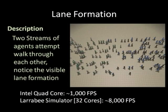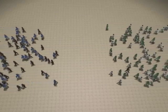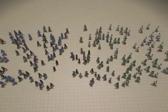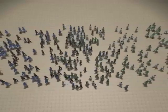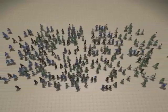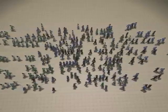Here, two streams of agents are asked to move across opposite ends of the screen. This simulation also runs at over 1,000 FPS on the quad-core and 8,000 FPS on Larrabee. The emergent lane formation also occurs with crowds of real humans walking.